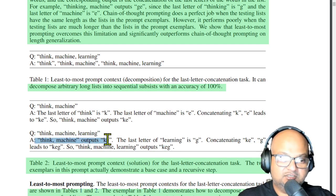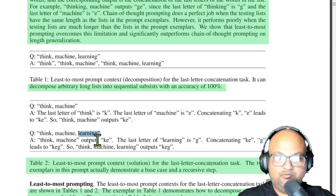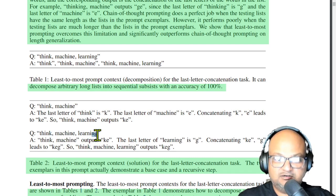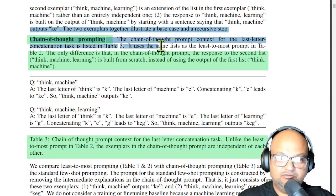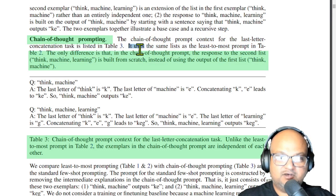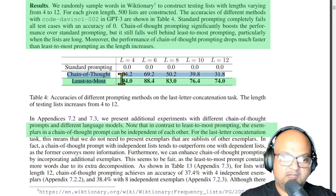Here's the crucial recursive decomposition. When you have a list of three words, in your answer you first refer to the solution from the sub-list of its first two words. Then you take the last letter of the last word in the list and concatenate that with the solution of the sub-list of the first two words, as opposed to taking the letters from each word and then concatenating them. That is the crucial point on which least to most prompting differs from chain of thought prompting. In the chain of thought prompt, the response would have been built from scratch instead of using the output from a sub-list.